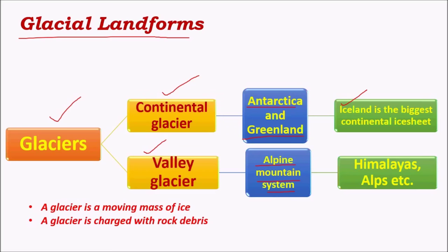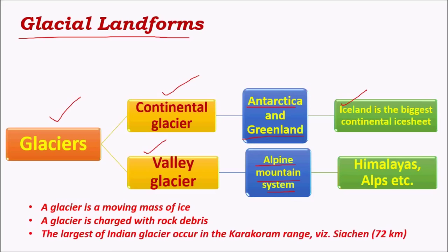Glaciers are charged with rock debris due to intense pressure and weight. The ice carries a lot of debris below it, including huge rocks, which keep striking against the lower strata. This causes a lot of wear and tear in the lower strata, and a huge amount of debris flows from the lower strata due to the pressure exerted by glaciers.